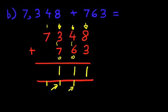And finally, we're going to add the thousands, which is this 7 here. There's nothing here, but we've got 1 here. So 7 plus 1 is 8. And we have our answer. It's 8,111. And that is correct.